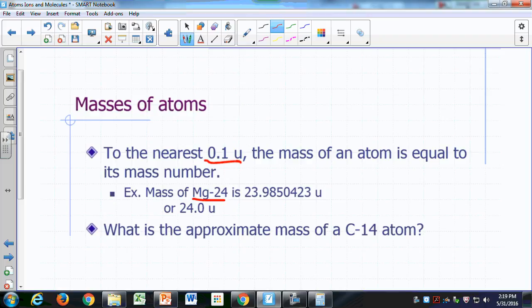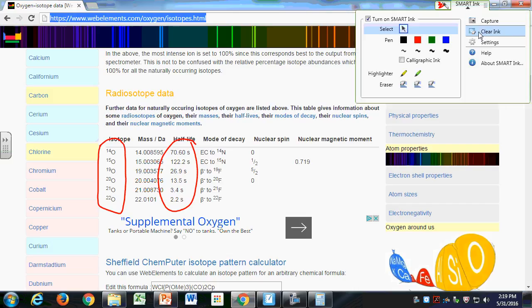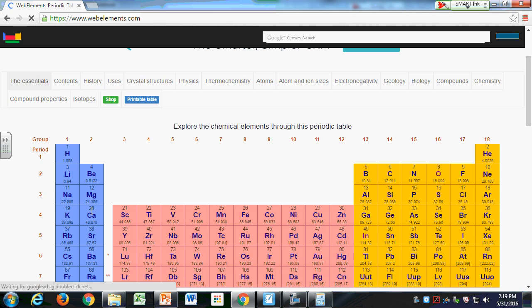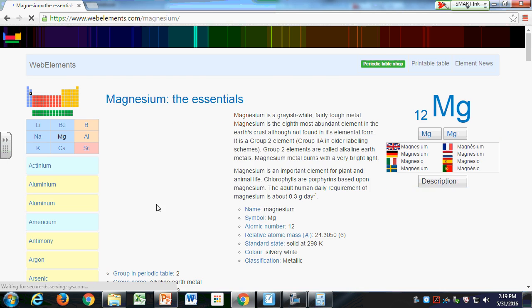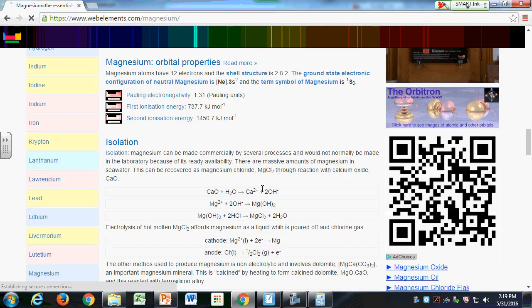So for example, magnesium-24. If you were to look it up, you go to webelements.com. There's magnesium right here, and you look at the isotopes.